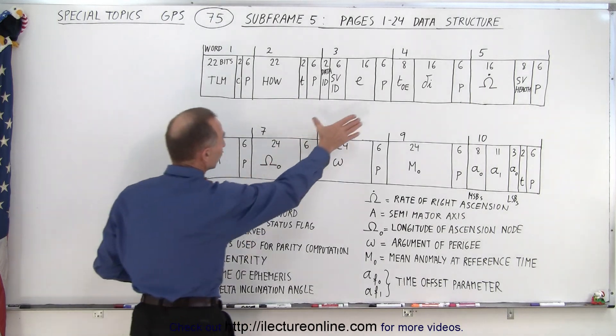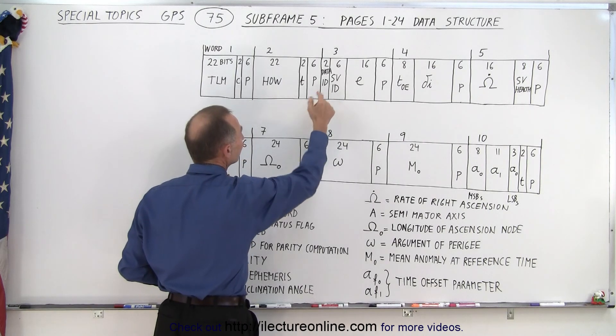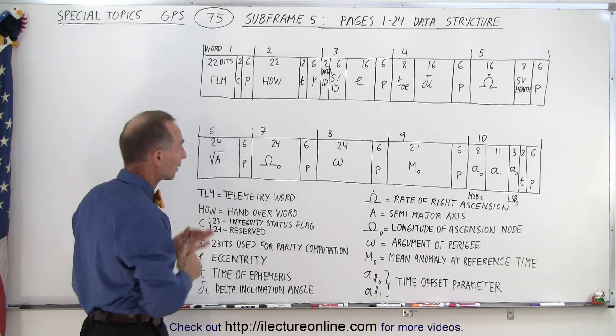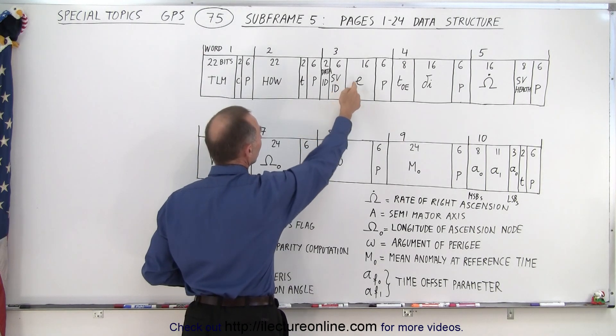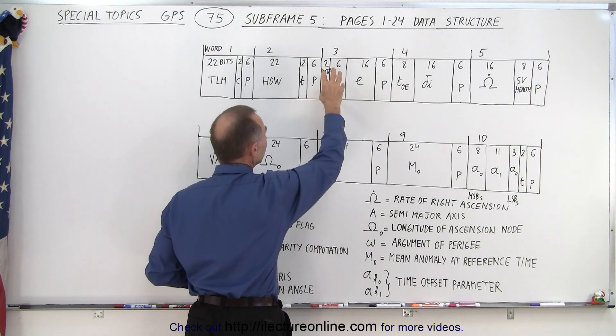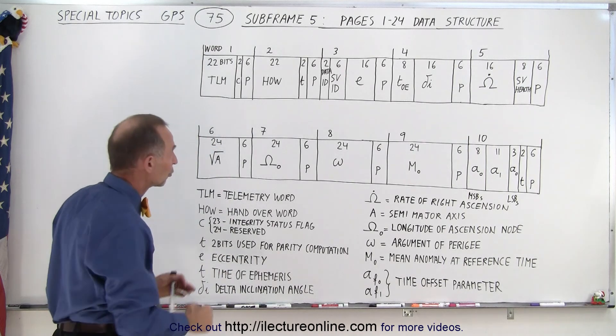Then if we go to the data word three, notice the first two bits are data ID information so it gives you an idea of this particular data set and the next six bits give you SVID. So this is where the receiver will figure out which satellite that particular information belongs to.